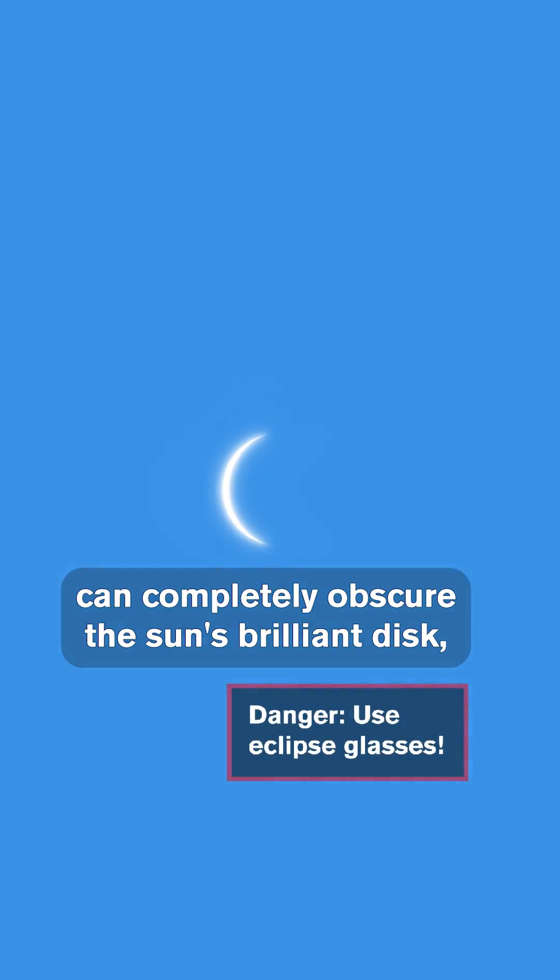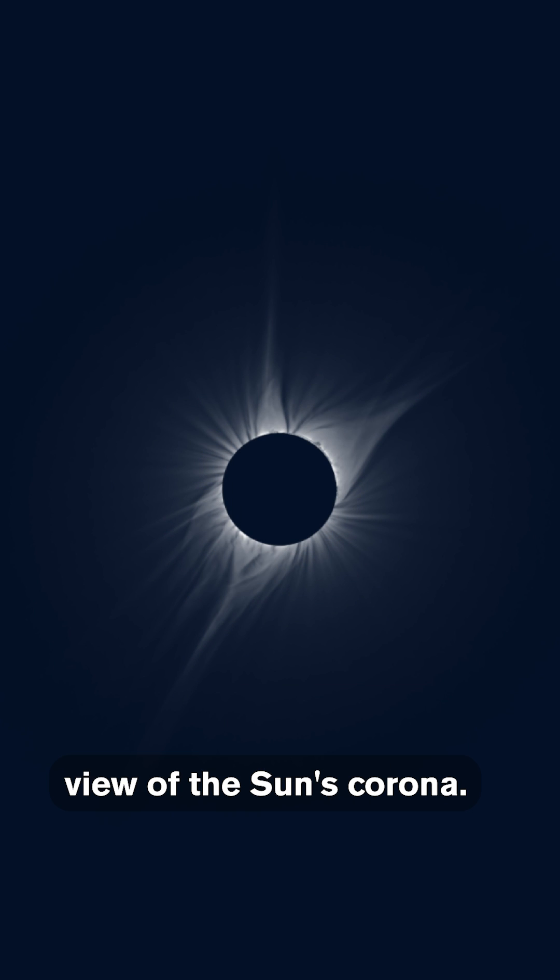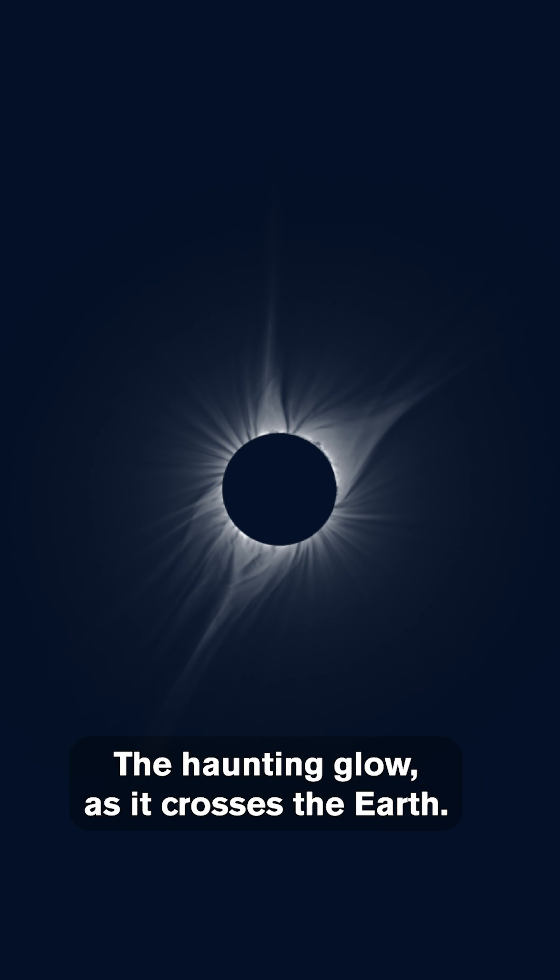This means that the Moon can completely obscure the Sun's brilliant disk, giving us a rare and stunning view of the Sun's corona, the haunting glow.